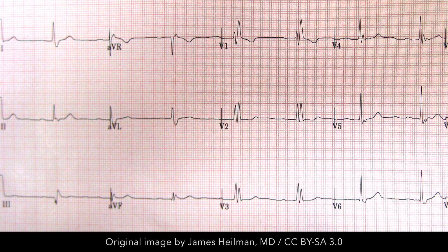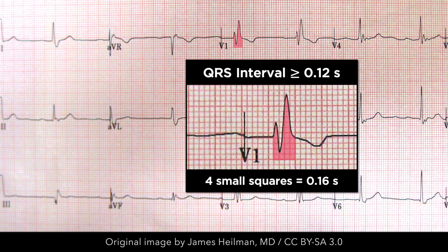The fundamental electrocardiographic finding of bundle branch block is a wide QRS complex. In adults, complete bundle branch block is present when the QRS complex is 120 milliseconds or greater in duration. On an ECG with a standard paper speed of 25 millimeters per second, this translates to a QRS complex that is three small squares or wider.